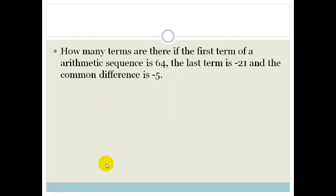Let's look at another example. It says how many terms are there if the first term of the arithmetic sequence is 64, the last term is minus 21, and the common difference is minus 5.